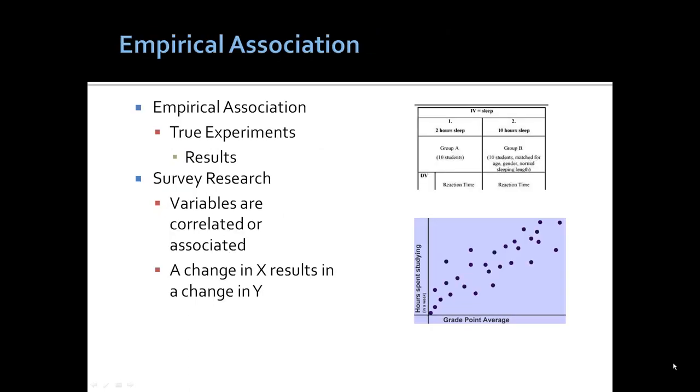Empirical association: in a true experiment, the results are a result of the experimental condition. Here, we're looking at sleep deprivation and reaction time. And because of the nature of the design, that is, the experimental design, we can conclude that differences in the reaction time at the end of the experiment result from the experimental conditions or sleep deprivation.